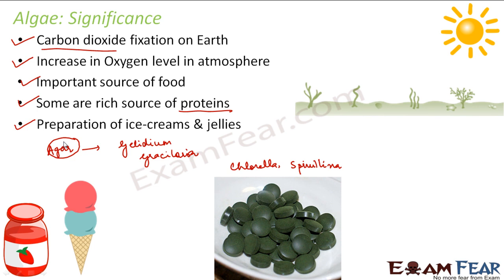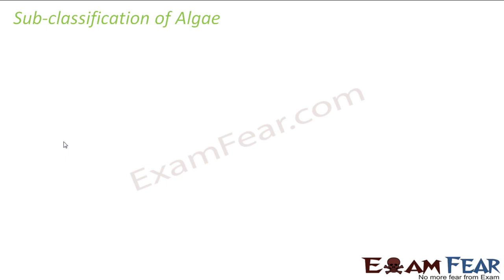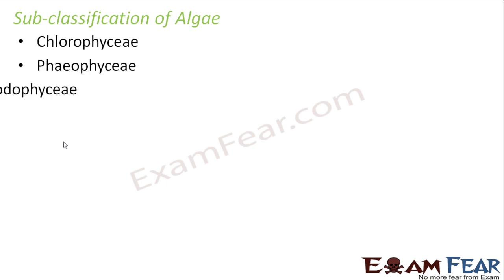So those are some of the significances of algae. Now we will study the subclassification of algae. Even within algae, there is a huge variety — not only green algae, but also algae that are red or brown in color. Based on their color, algae are divided into three types: Chlorophyceae, Phaeophyceae, and Rhodophyceae.